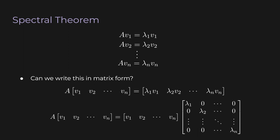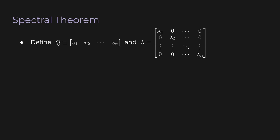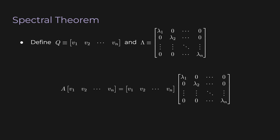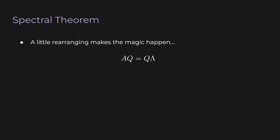Let's call the matrix of eigenvectors Q — not the same Q from QR factorization, but I'm using Q because it's an orthogonal matrix whose columns are orthonormal. Also, let's denote this diagonal matrix of eigenvalues as capital Lambda. So our equation becomes AQ equals Q Lambda. Now just a little rearranging: since Q is orthogonal it has an inverse, so we apply the inverse to both sides to get A equals Q Lambda Q inverse. Since Q is orthogonal, Q inverse equals Q transpose, so finally we get A equals Q Lambda Q transpose.